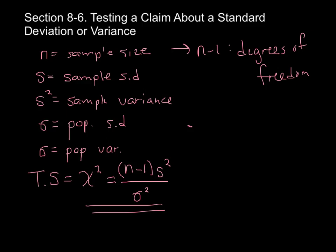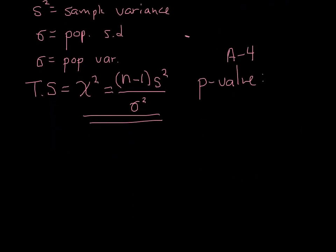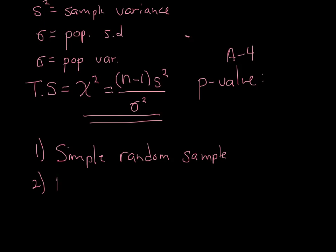Based on our test statistic, we are going to find a p-value, since we're using the p-value method. We're going to use our chi-squared distribution — it's table A4. However, we're going to show how to use technology, especially with the chi-squared distribution, to find our p-value. There are two requirements when using this method to test a claim: one, that our sample comes from a simple random sample; and two — and this one's important — the population has a normal distribution.